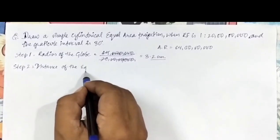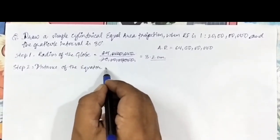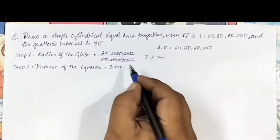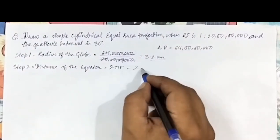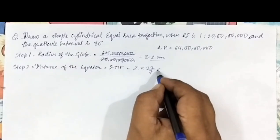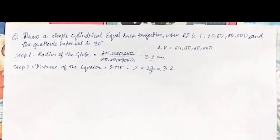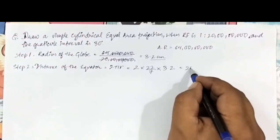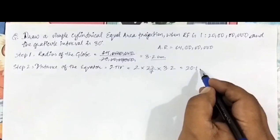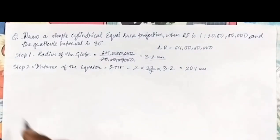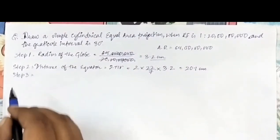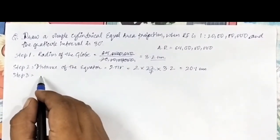Step number two: we need to find the distance of the equator. For that we apply the formula 2πr, where π is 22/7 and the radius we found is 3.2 centimeters. After the calculation you get the answer 20.1 centimeters.